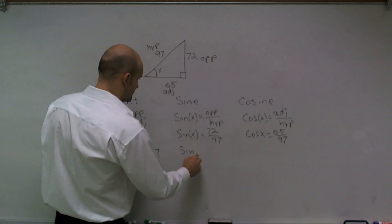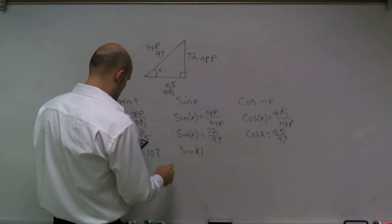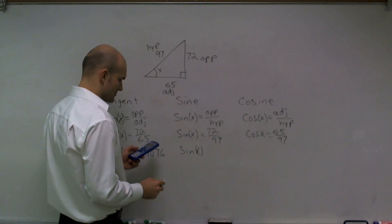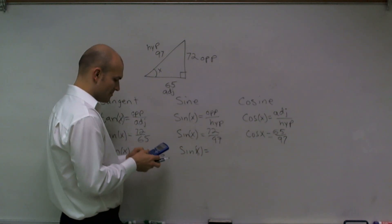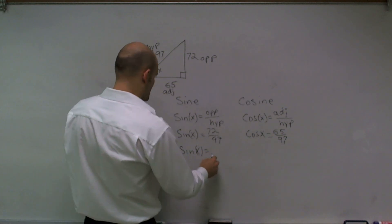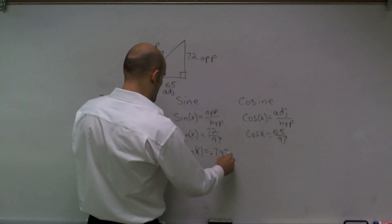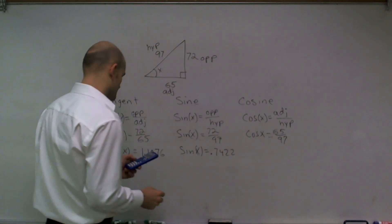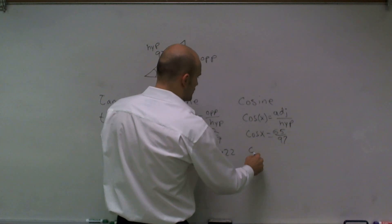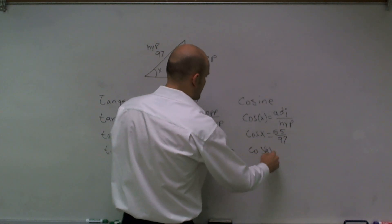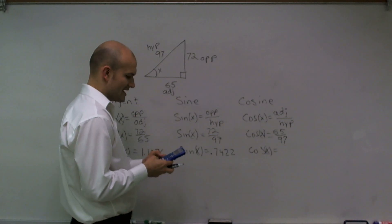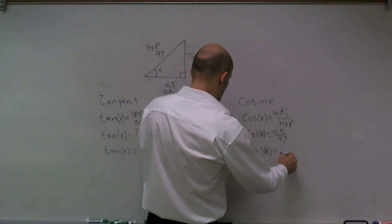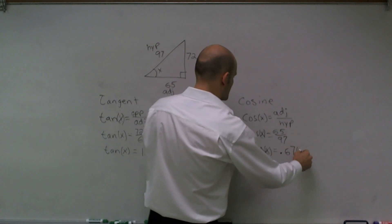The sine of x is going to equal 72 divided by 97, which is 0.7422. And the cosine of x equals 65 divided by 97, which is 0.6701.